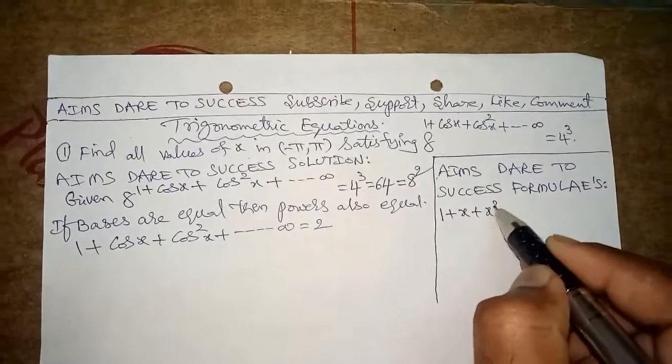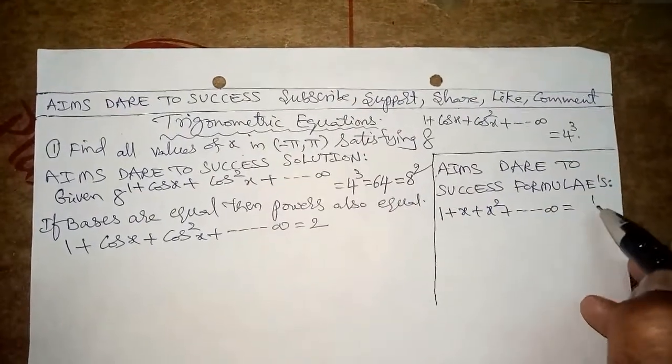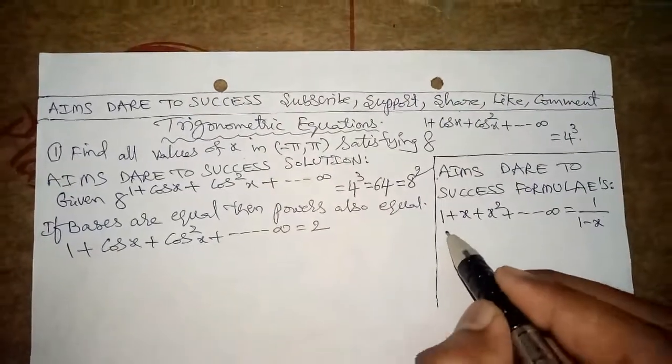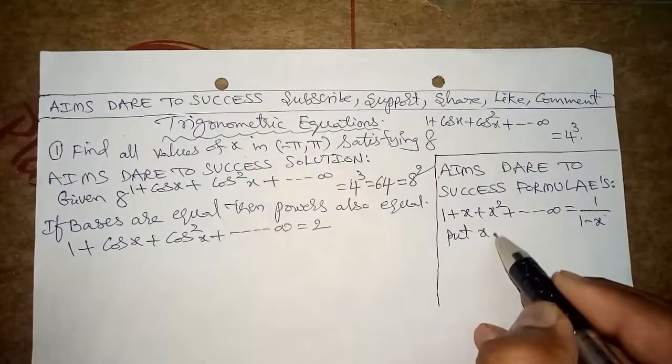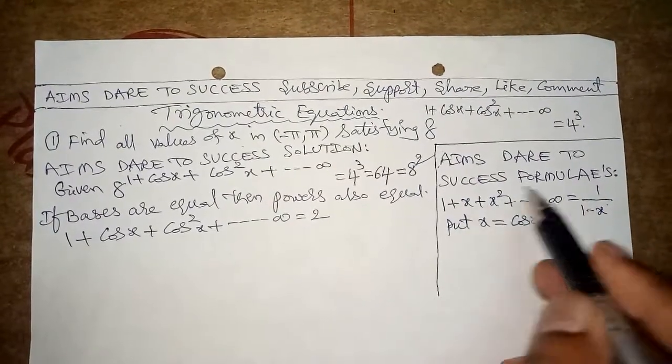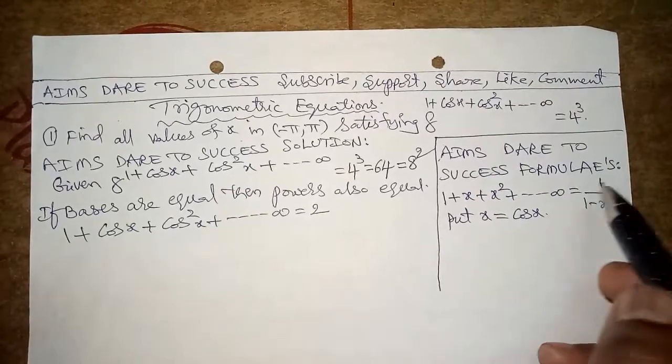One formula: 1 + x + x² + x³ + ... = 1/(1−x). Put x equal to cos x. So this is a formula: 1 + x + x² + ... = 1/(1−x).